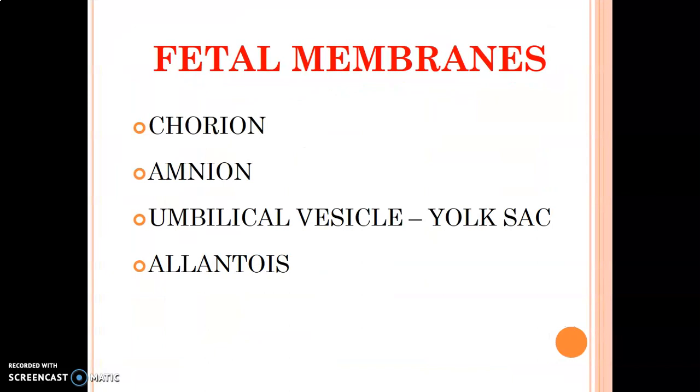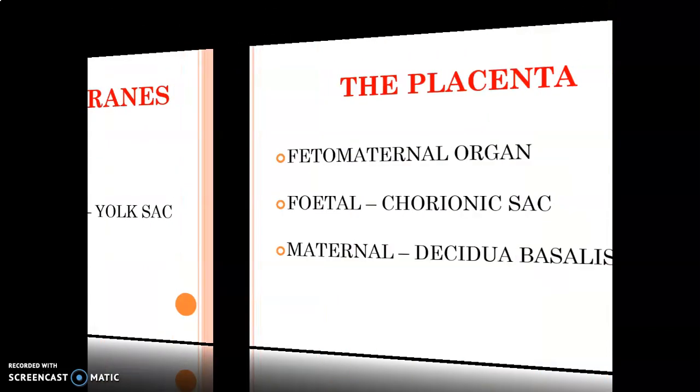We have four main fetal membranes: the chorion, amnion, umbilical vesicle from the yolk sac, and the allantois.